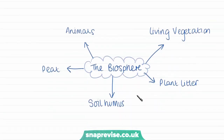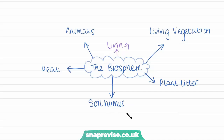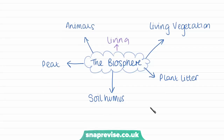The biosphere is the living part of the carbon cycle, including plants, animals, and living vegetation. Carbon is also found in decaying plant and animal matter, which can be called plant litter, soil, humus, and peat. Plant litter is when leaves fall off plants and lie on the floor; they then begin to decay and form soil, humus, and eventually peat.